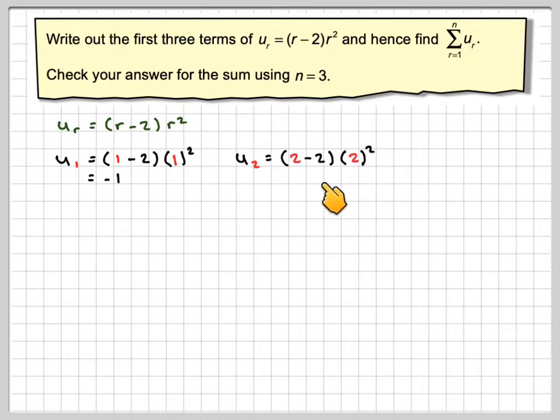And then U_2 will be 2 minus 2 times 2 squared, which will give me 0. And U_3 will be 3 minus 2 times 3 squared, which will give me 9.